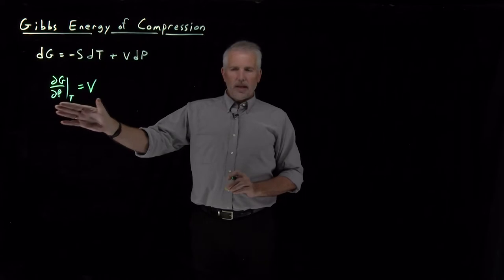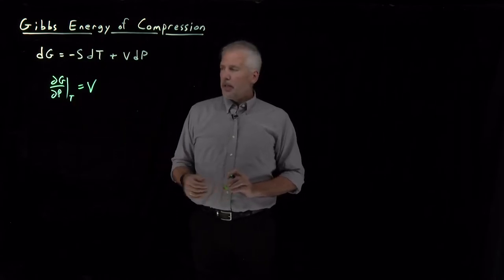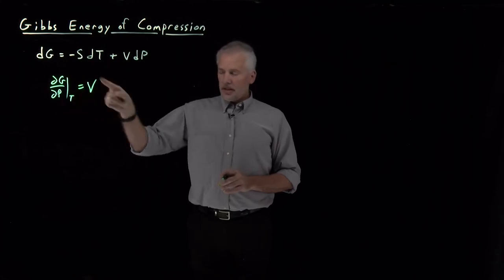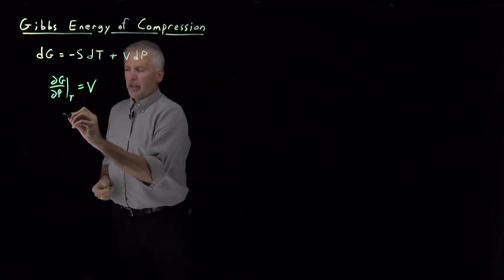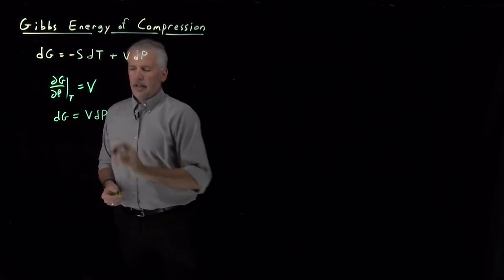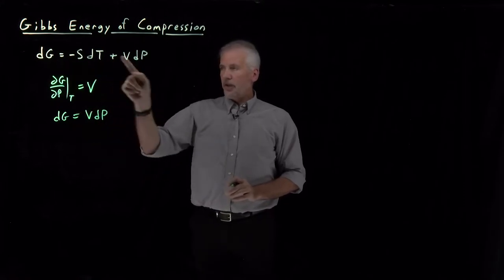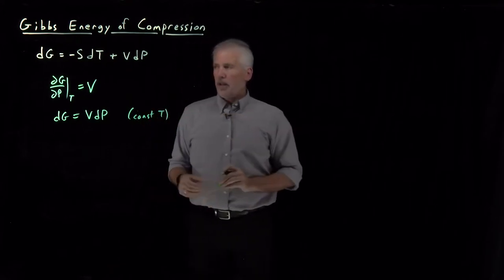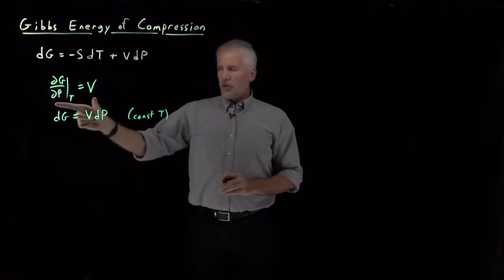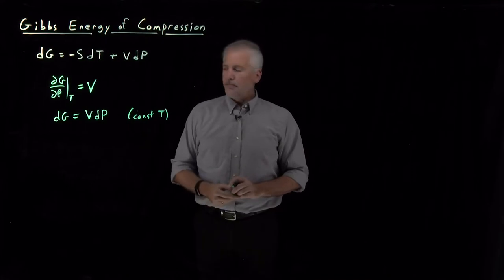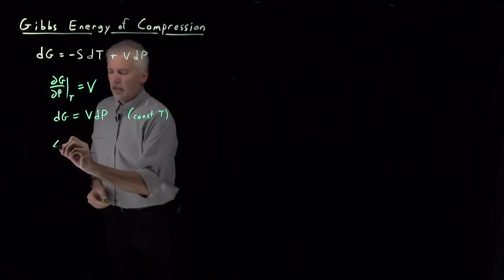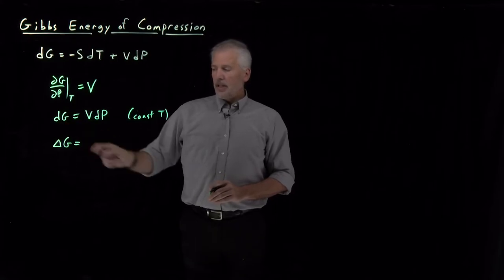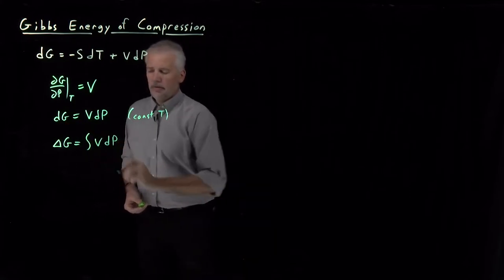Let's see if we can understand what that expression means. Typically we'll use that expression if we exert pressure on something, change the pressure on an object, and we want to know how much its Gibbs free energy changes. We'll rearrange this equation to say dG is equal to VdP. If we're at constant temperature, Gibbs free energy change is volume times change in pressure. If I want to know the finite change in Gibbs energy rather than the infinitesimally small change, I just need to integrate this expression, integral of VdP.